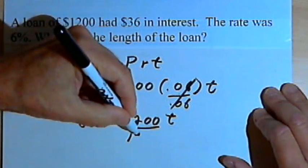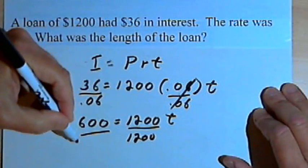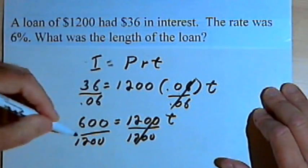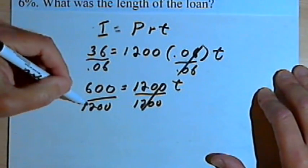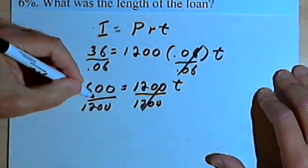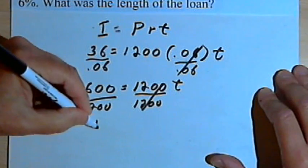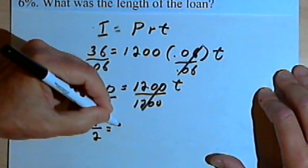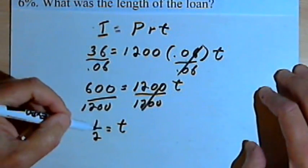Next I just divide both sides by 1200. 600 divided by 1200, I can reduce that down. Let's just reduce that to one-half. So T equals one-half.